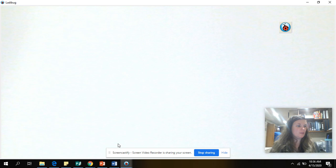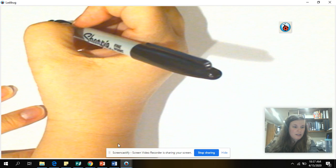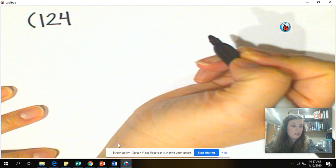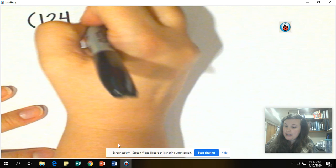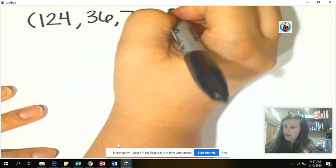So what do we need to know? How many bubbles are left? But this sounds like a two-step problem. So that means we have a hidden question. Let's go ahead and look at our numbers that we have. Our first number set is going to be 124 bubbles that I blew in the air. Mila came and she popped 36 of them. Then I blew 79 more bubbles.